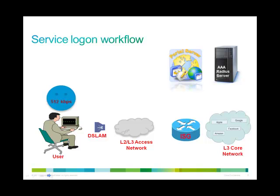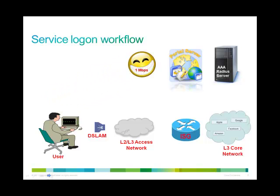Here is a user who wants to upgrade the service from a 512 kbps package to a 1 Mbps package. Since the user is already authenticated through account logon, the user can directly access the service portal by typing the address of the portal into the address bar. The portal sends a service logon message to the ISG informing it of the service requested by the user.